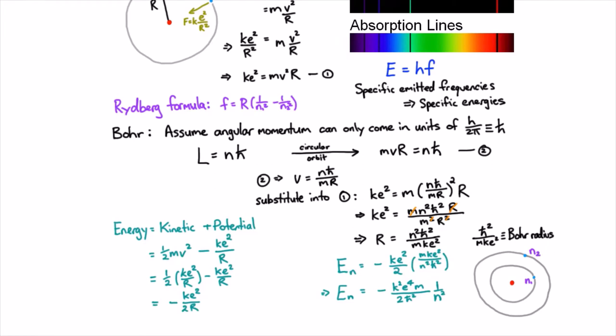Bohr said this electron can't just emit radiation and decay because it can only be in these particular levels. To emit a photon it has to make a transition from one level to another. When it does that, it changes its energy by the discrete amount, the difference between En2 and En1. The energy difference is something times one on n1 squared minus one on n2 squared. Since frequency is proportional to energy, we get the Rydberg formula.